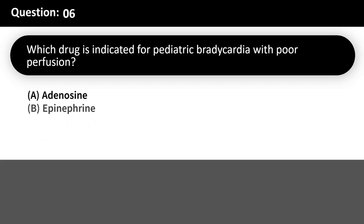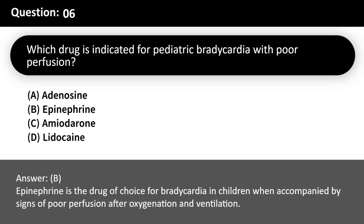Which drug is indicated for pediatric bradycardia with poor perfusion? A. Adenosine. B. Epinephrine. C. Amiodarone. D. Lidocaine. Answer: B. Epinephrine is the drug of choice for bradycardia in children when accompanied by signs of poor perfusion, after oxygenation and ventilation.